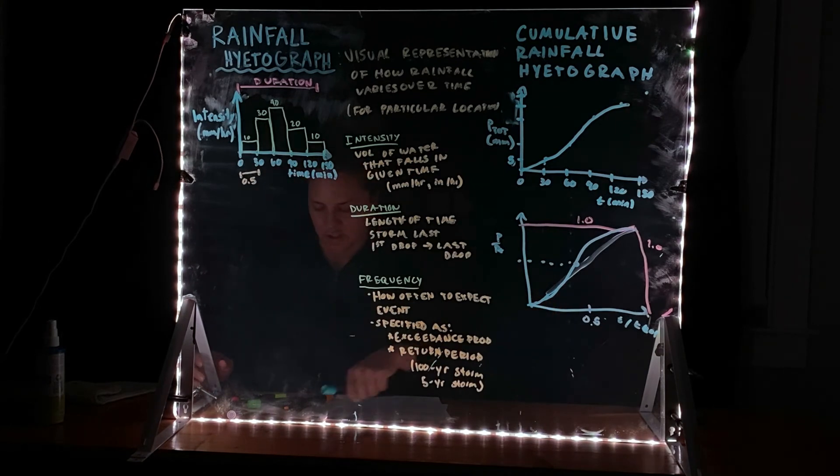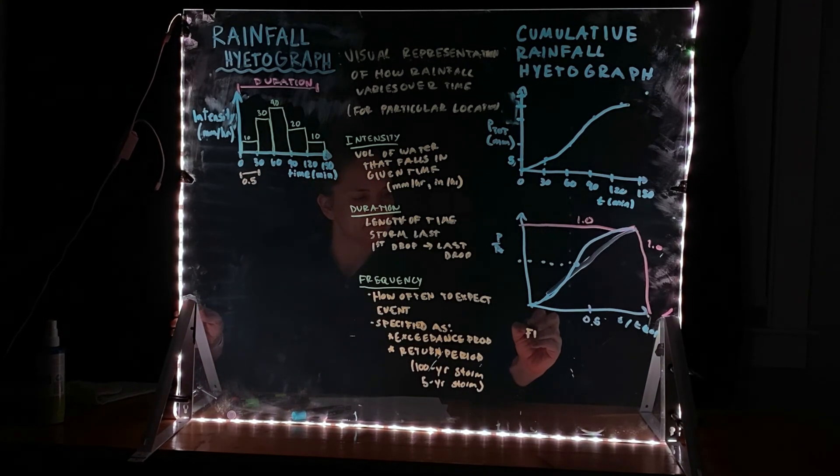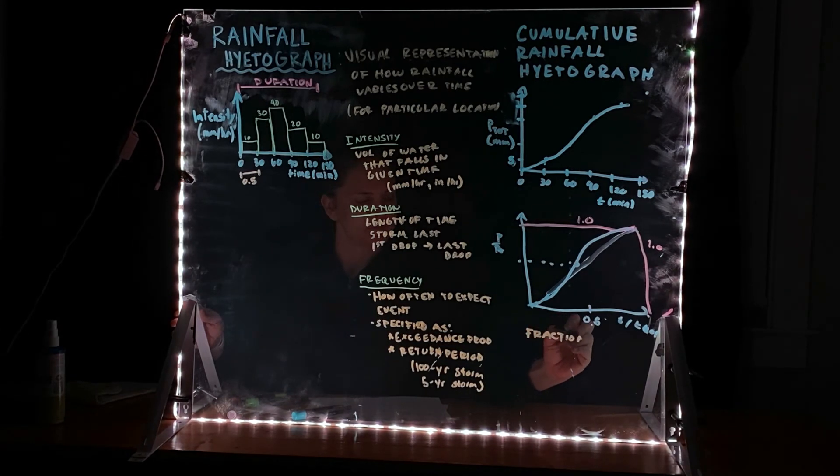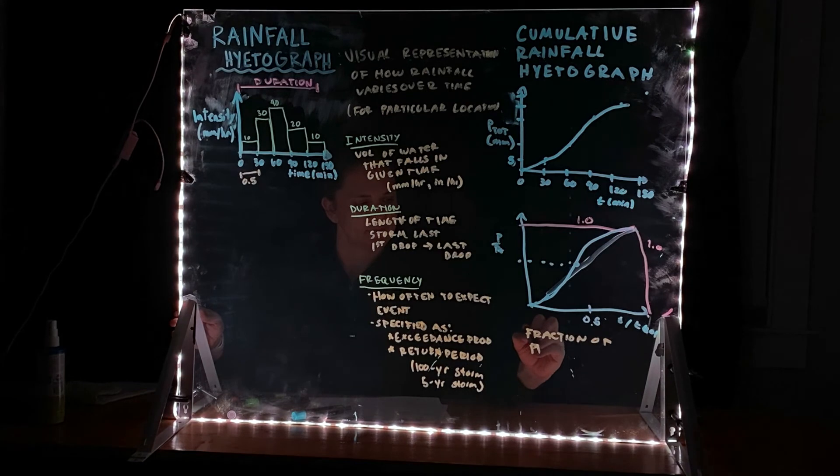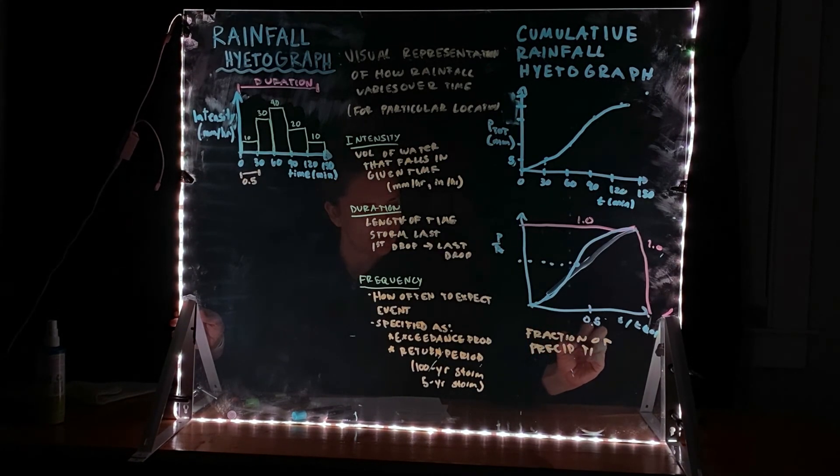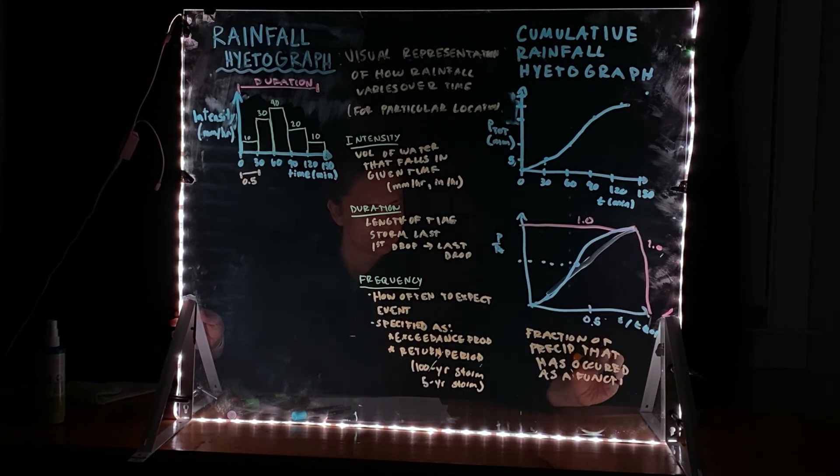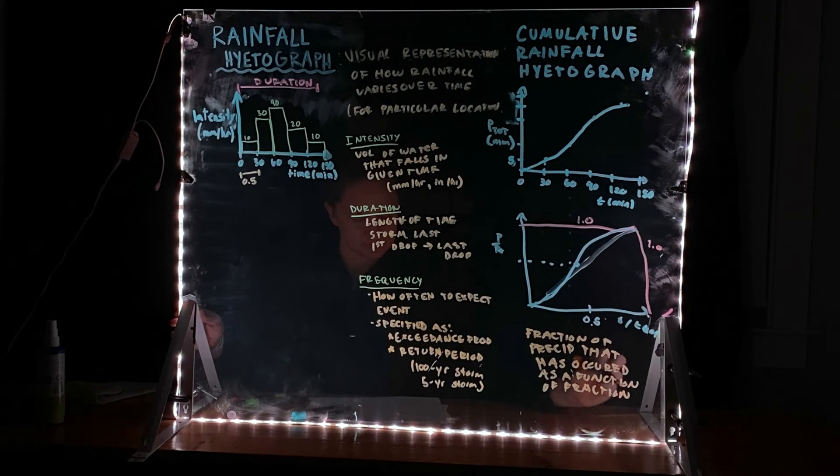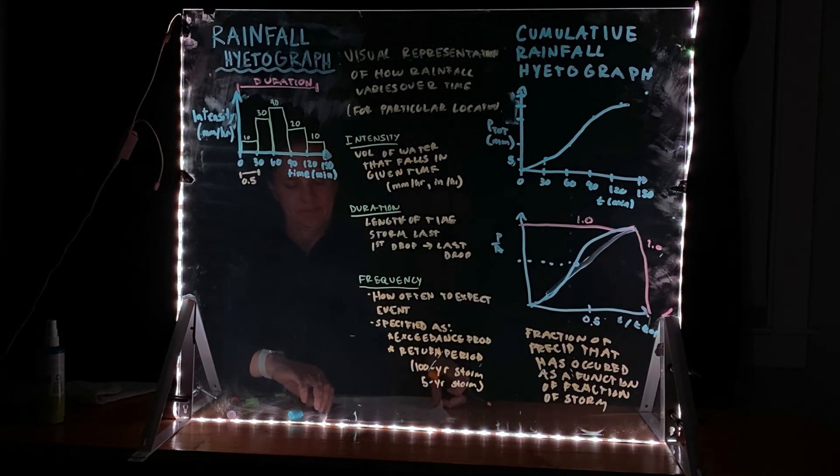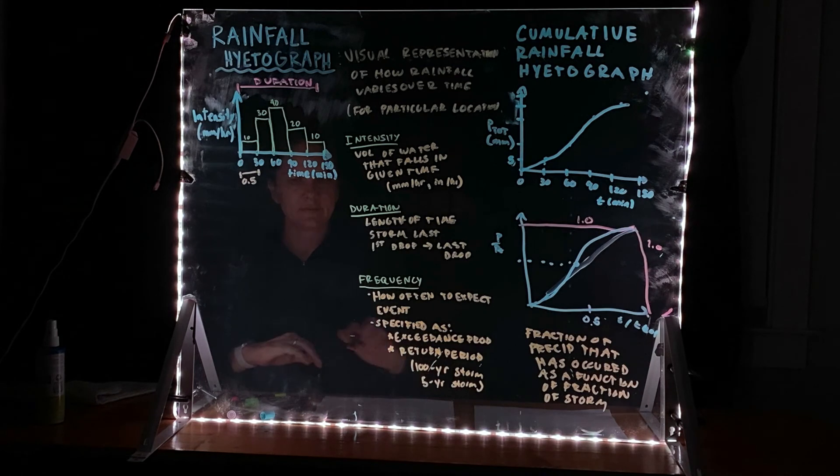So that is what this is. It's the fraction of precipitation that has occurred as a function of the fraction of the storm.